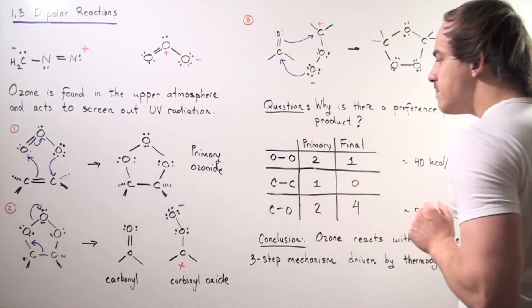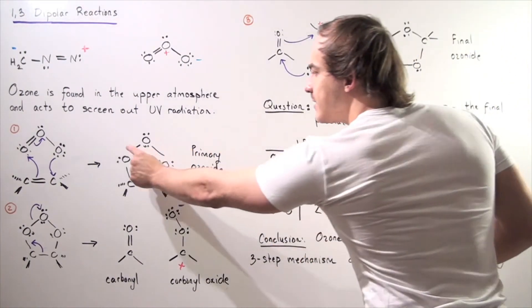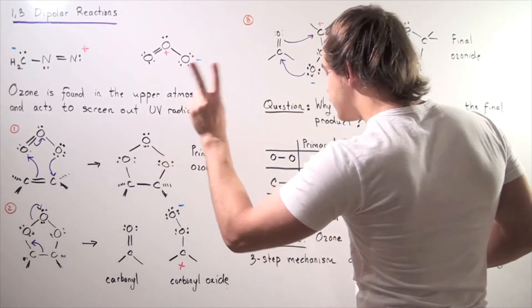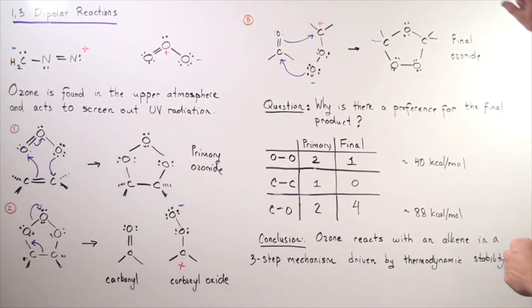So oxygen-oxygen, we have two of them. While in this final ozonide, we have only one found here on the bottom.